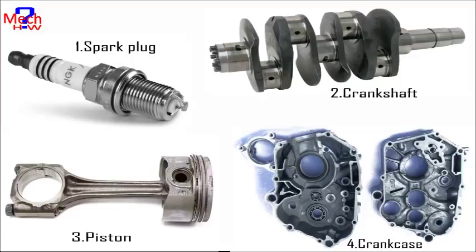Six, crankshaft. It converts the reciprocating motion of the piston into useful rotary motion of the output shaft. In the crankshaft of a single cylinder engine, there are a pair of crank arms and balance weights. The balance weights are provided for static and dynamic balancing of the rotating system. The crankshaft is enclosed in a crankcase.